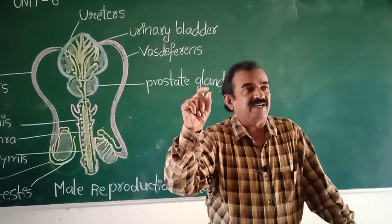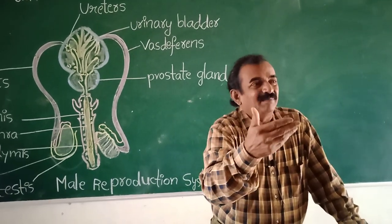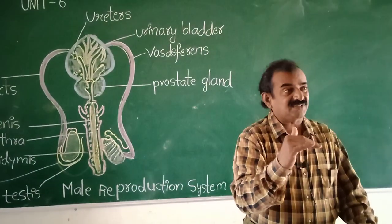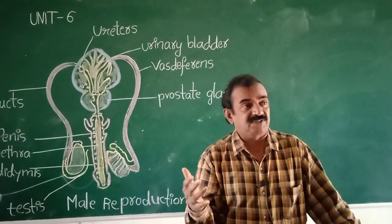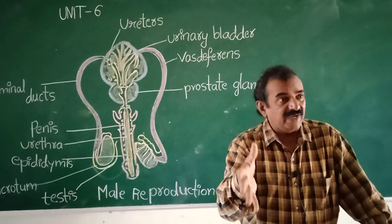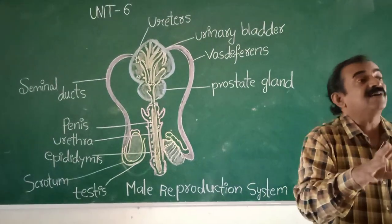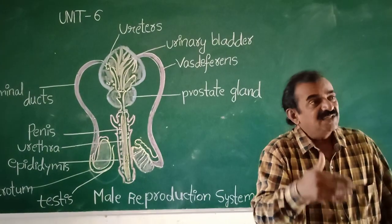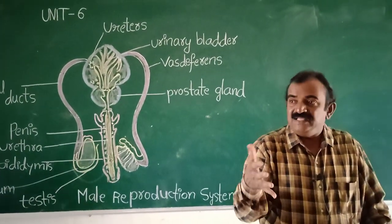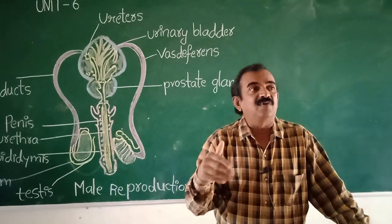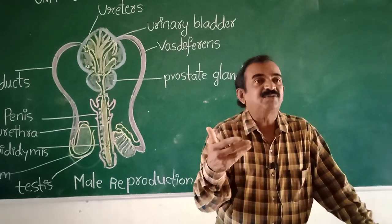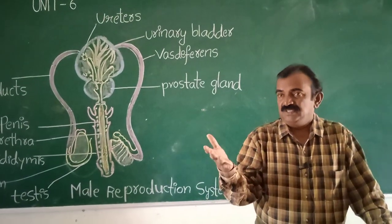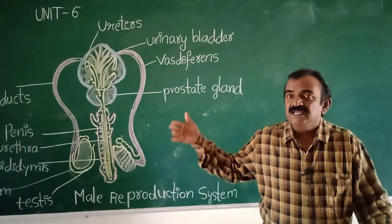Reproduction in placental mammals — especially in human beings — special types of reproductive systems are observed in the case of males and females to carry out reproduction. Let us study them in detail. Human males have their own reproductive organs and human females have their own reproductive organs. These reproductive organs are helpful for giving birth to a baby or offspring. Today we are discussing the human male reproductive system.